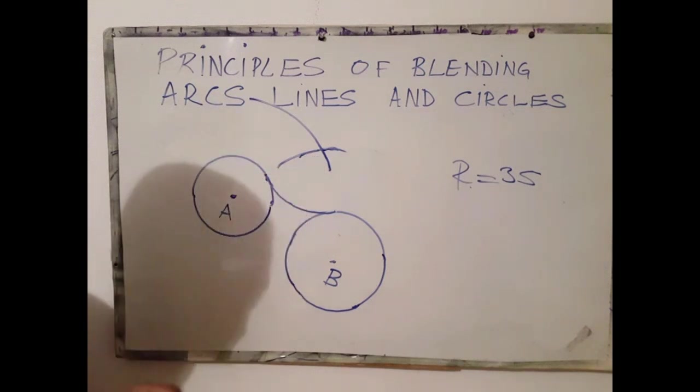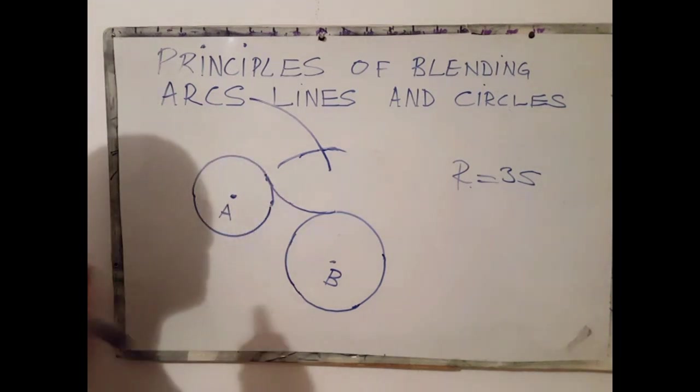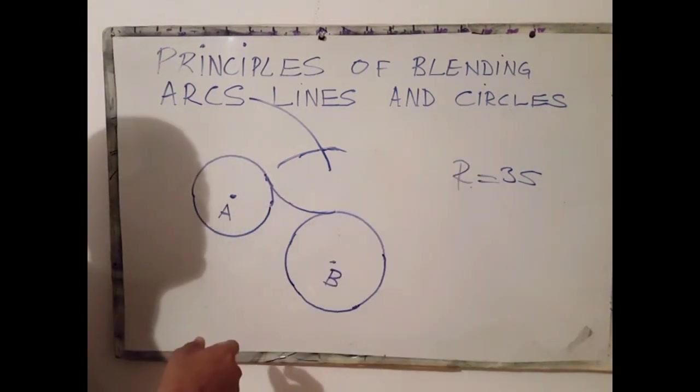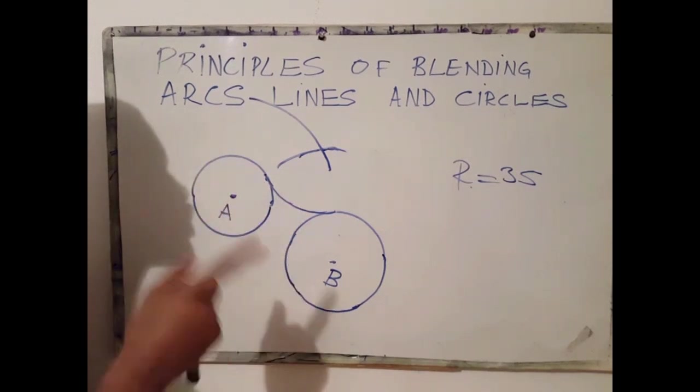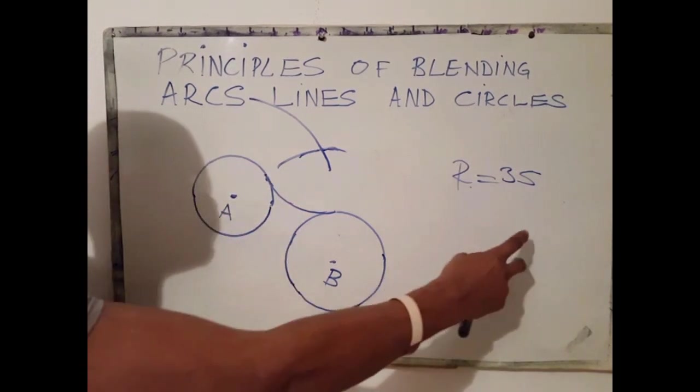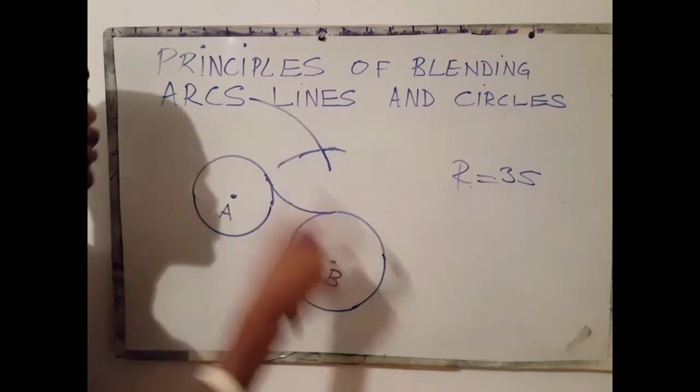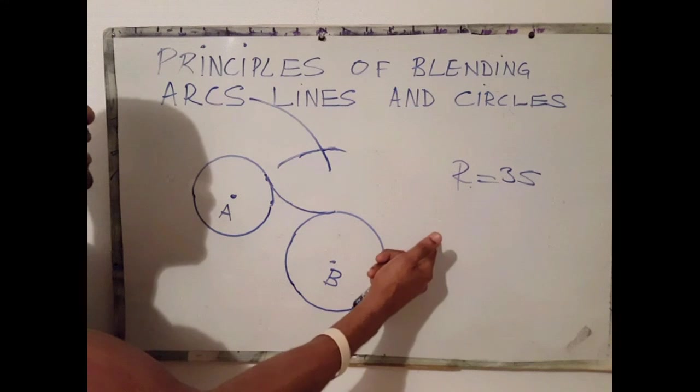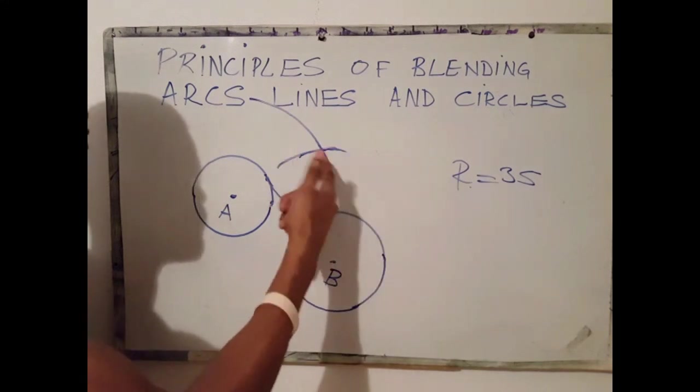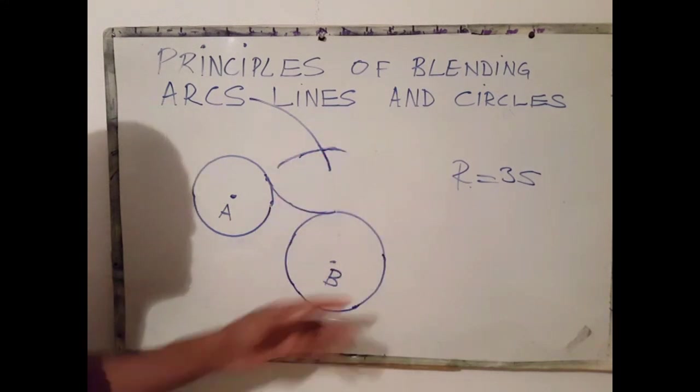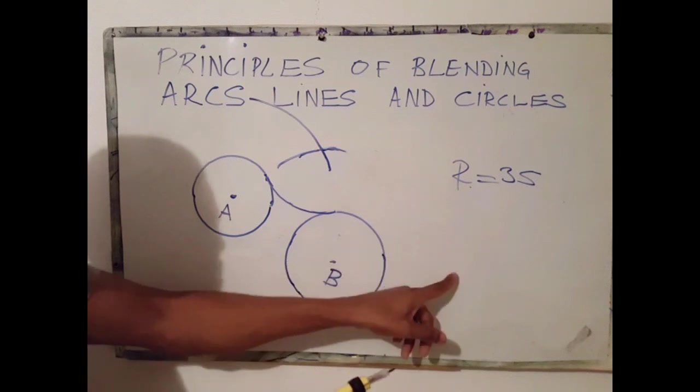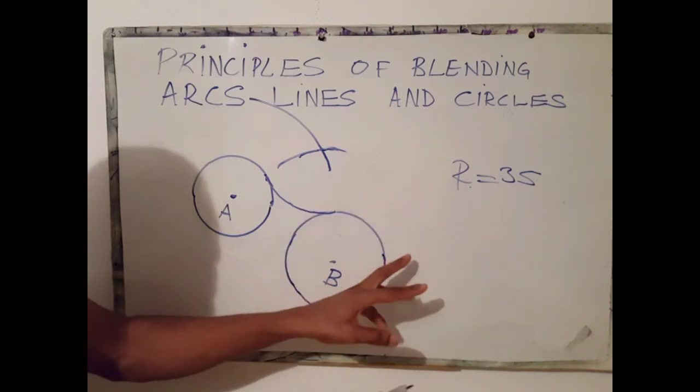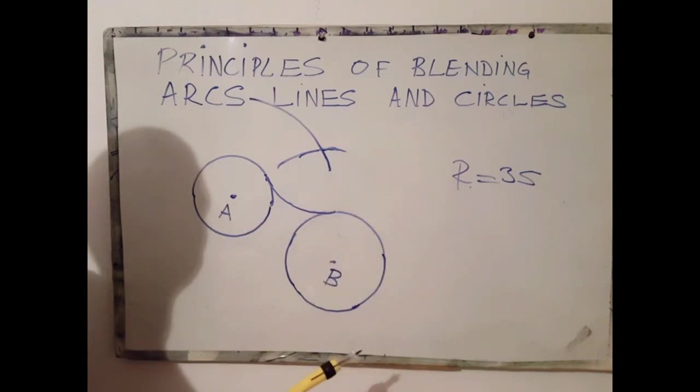Next principle says that once an arc or a circle blends with a straight line and a point or a circle, we always need to draw a parallel line to the existing line at a distance, a parallel distance, which is the same as the radius. So if the radius that bends that line is 30 millimeters, we must draw that parallel line of 30 millimeters.